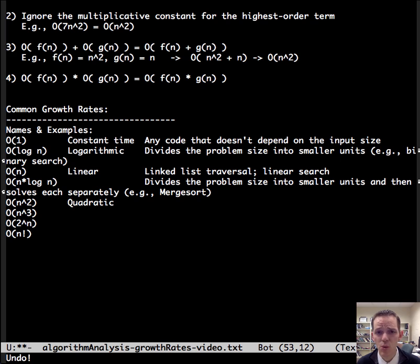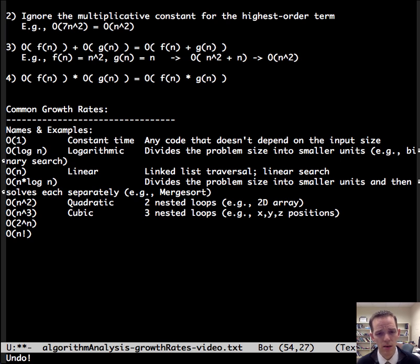The next one is N squared or quadratic. And so we've seen this with two nested for loops. You could think a two dimensional array. N cubed is cubic. For example, a common scenario you're going to see this is if you're tracking X, Y, and Z positions or three nested loops to do that and to solve that.